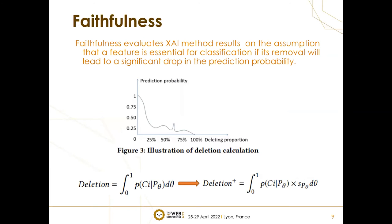The OOD problem exists not only in perturbation-based XAI methods, but also in a widely used XAI evaluation metric called faithfulness. One explanation of faithfulness deletion evaluates XAI method results on the assumption that a feature is essential for classification if its removal will lead to a significant drop in the prediction probabilities. A better XAI algorithm points out key parts where the probabilities drop sharply. This area under the curve is the value of deletion, and the better the XAI method performs, the smaller this value is. The below equation is used for deletion calculation. With the same rationale, we improve the deletion to deletion+, with the consideration of the inlier score.